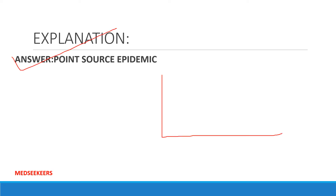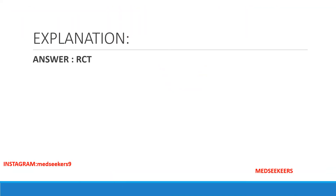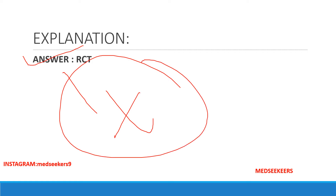In a point source epidemic, cases rise rapidly and fall off gradually. Next question from epidemiology study designs: which of the following is NOT an analytical study? Option A: case control; option B: cohort; option C: RCT (randomized control trial); option D: cross-sectional. Your answer should be RCT — randomized control trial is not an analytical study, it is an experimental study.